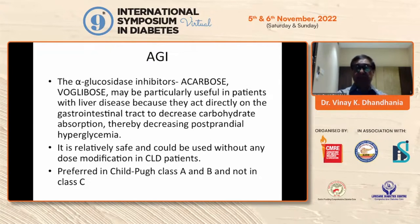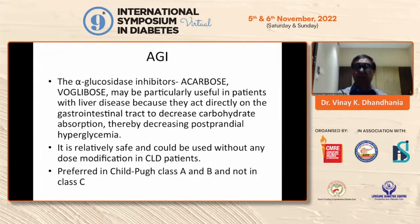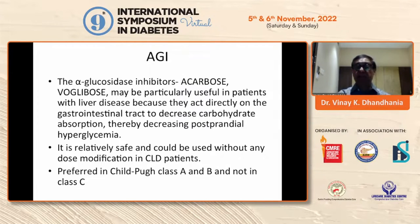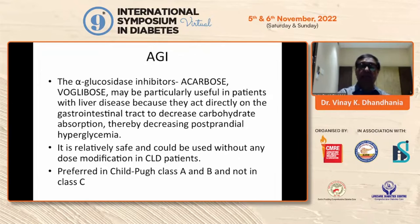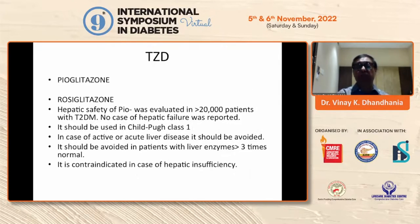Alpha-glucosidase inhibitors like acarbose and voglibose may be particularly useful in patients with liver disease because they act directly on the GI tract to decrease carbohydrate absorption, thereby decreasing postprandial hyperglycemia. They are relatively safe and can be used without dose modification in CLD patients, preferred in Child-Pugh class A and B and not in class C. Acarbose can be added along with even insulin and low doses of metformin.